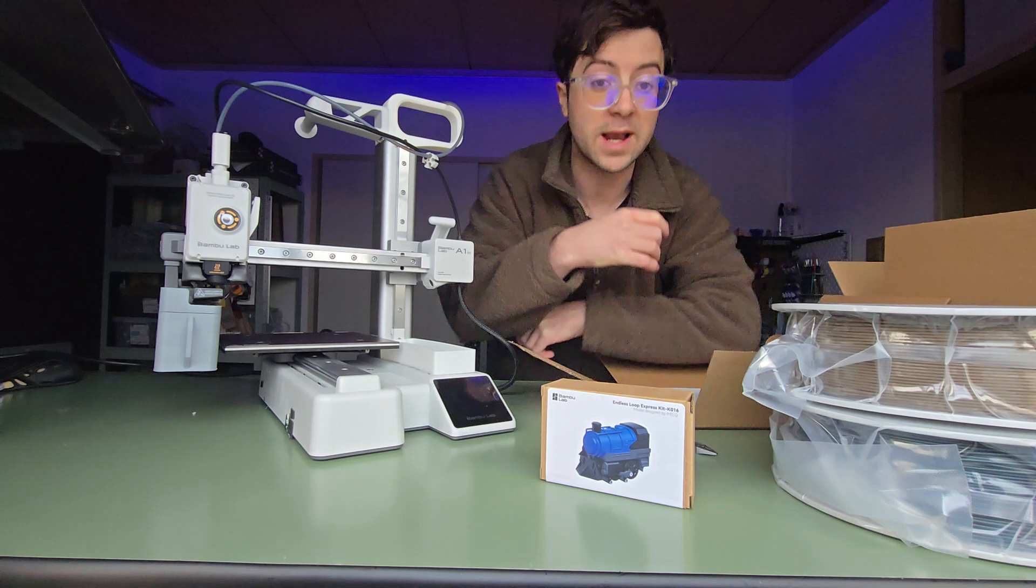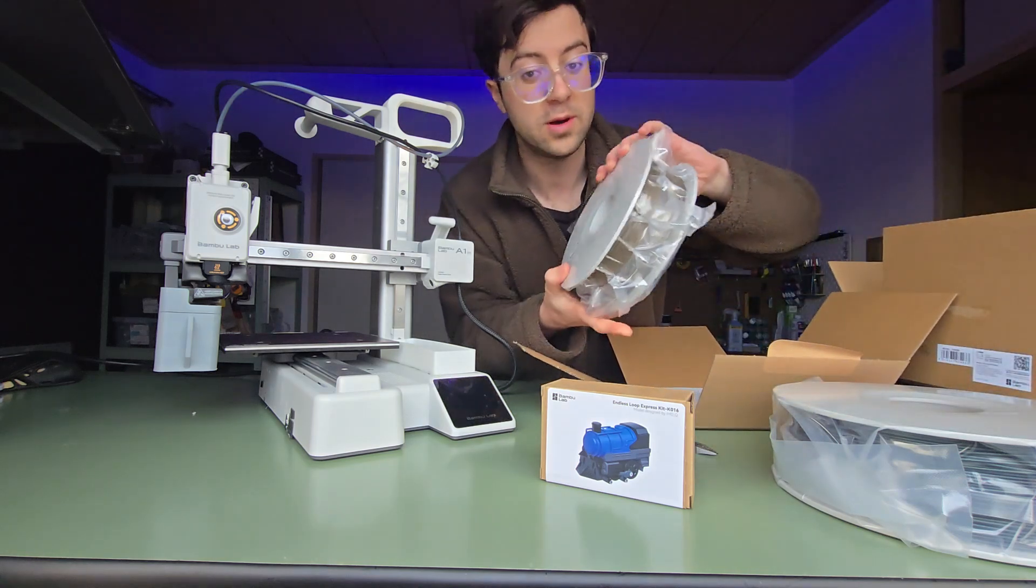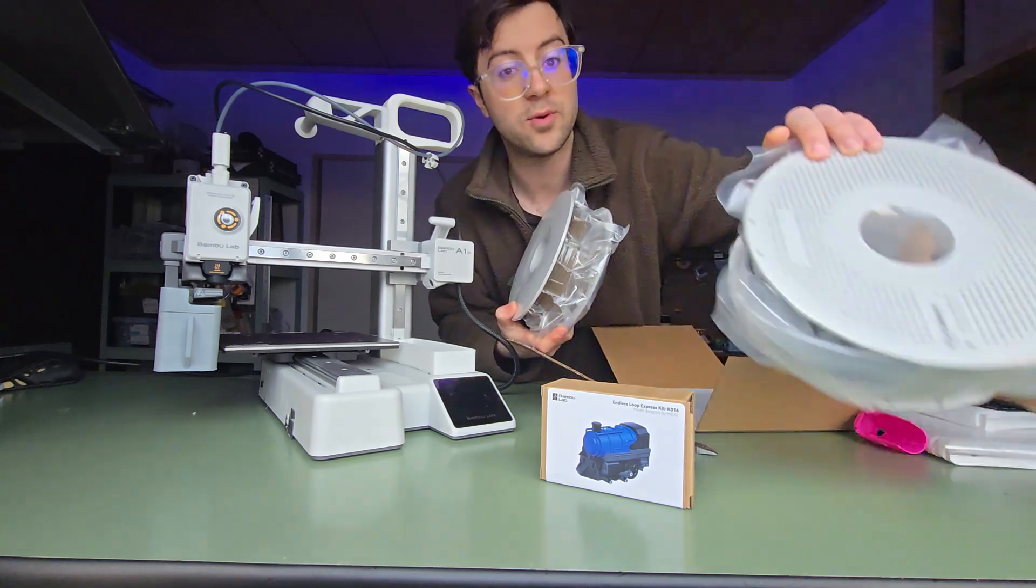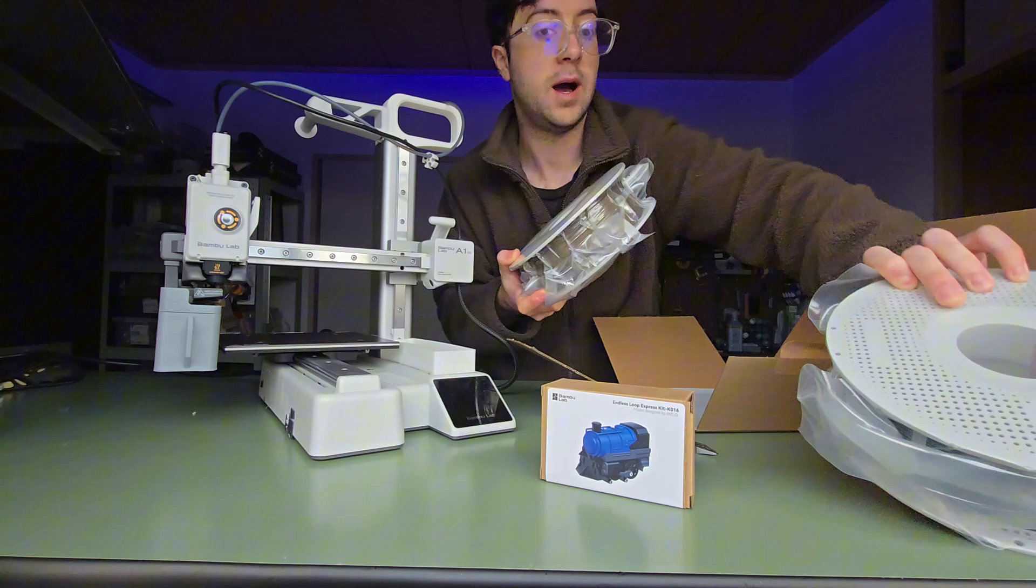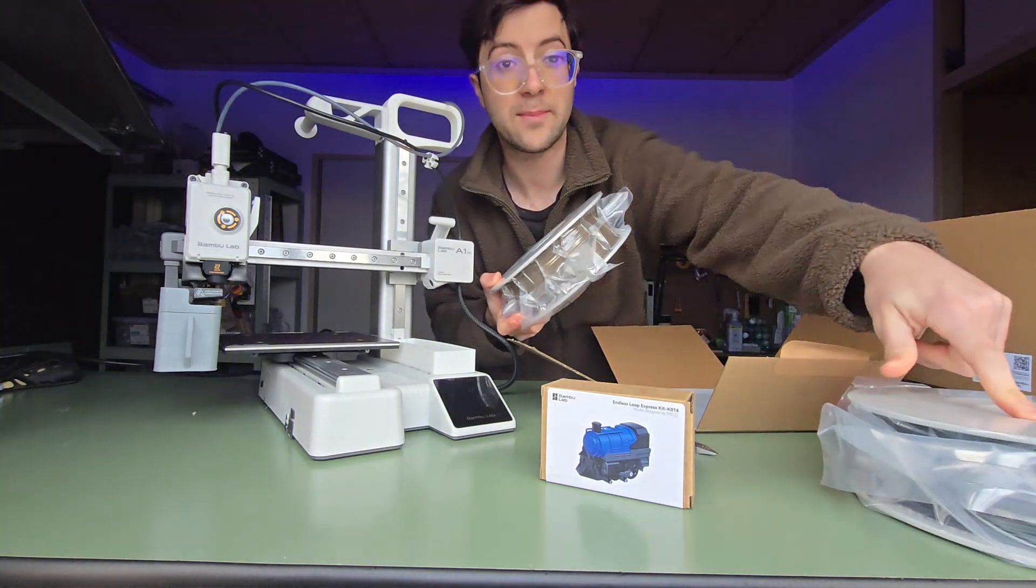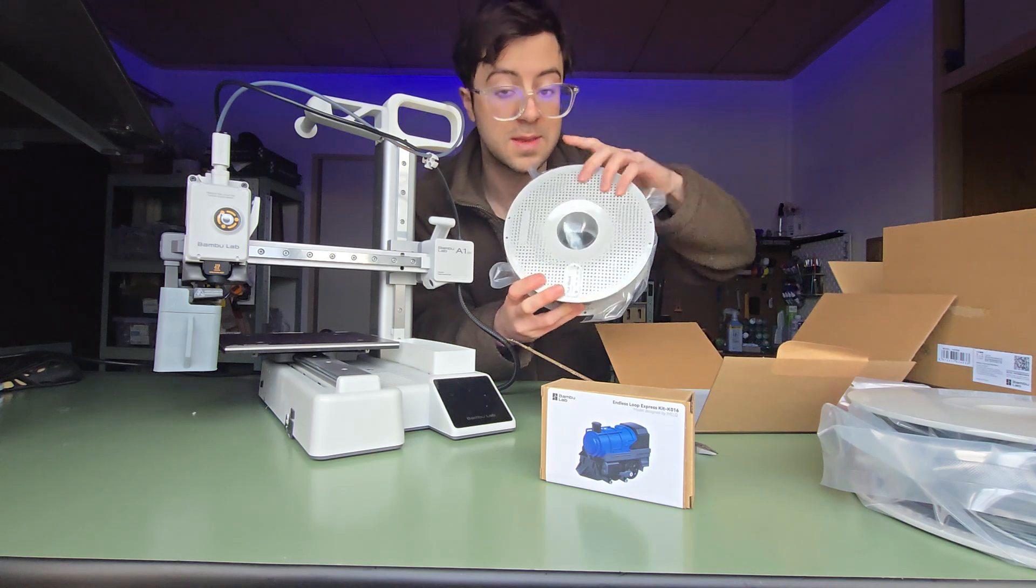For this test today we have some new filament: the new PLA Wood from Bambu Labs and one of their Sparkle Galaxy ones as well. We're going to use that for the black parts, but for the tracks I think it'd be quite cool to use this wood filament.